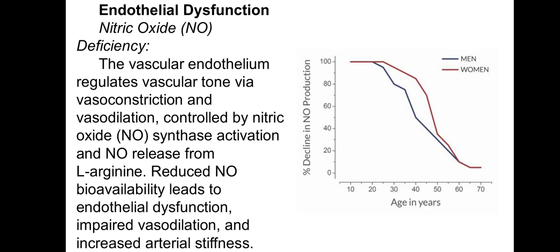Nitric oxide deficiency is another problem with aging. The vascular endothelium regulates vascular tone via vascular constriction and dilation, controlled by nitric oxide synthase. Activation of this enzyme in endothelial cells and release of nitric oxide from oxidation of L-arginine is key. Reduced nitric oxide bioavailability leads to endothelial dysfunction, impaired vasodilation and increased arterial stiffness. After age 30, the endothelium is no longer able to produce enough nitric oxide, leading to increased arterial stiffness and degradation of the vascular system.